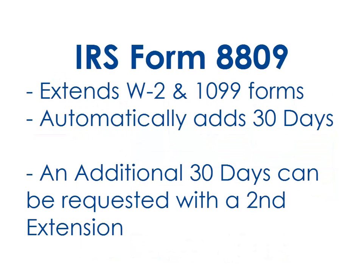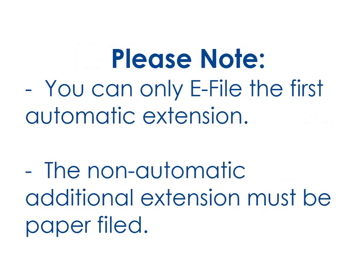The Form 8809 provides an extension for W-2 forms and any 1099 form. You get 30 days of extension automatically, and if needed, you can also file a second non-automatic extension for an additional 30 days. Please note that you can only e-file the first automatic extension with the IRS.